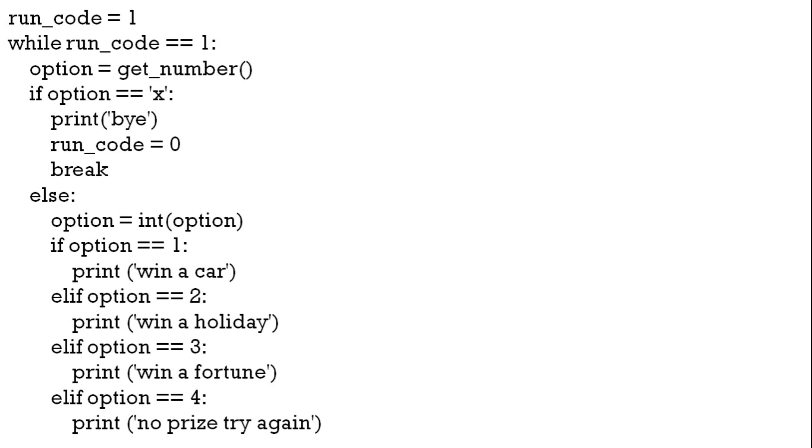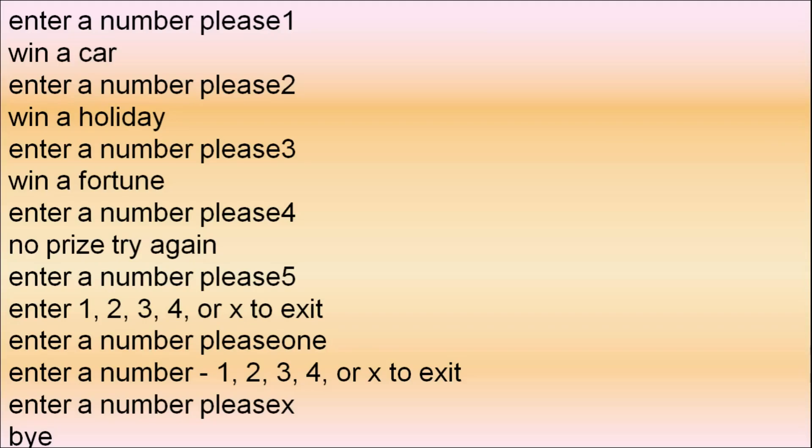To call the function we just have option equals get number in the code. We can test it. So we put in one win a car, two win a holiday, three win a fortune, four or no prize, try again.